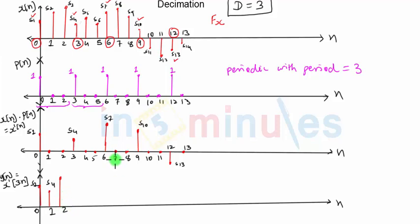After that, the next sample will be 7 by 3, 8 by 3 are not integers, so we will not consider them. 9 by 3 is equal to 3, so the next sample will be s10, and s10 will be shown somewhere here at n equal to 3.